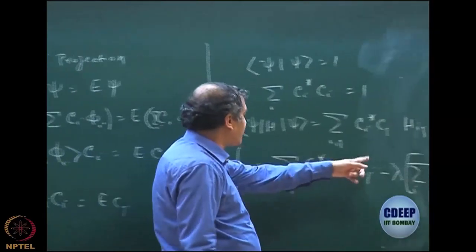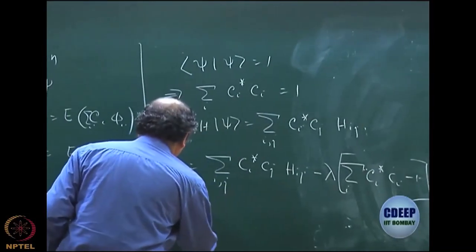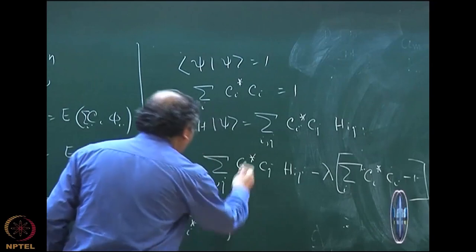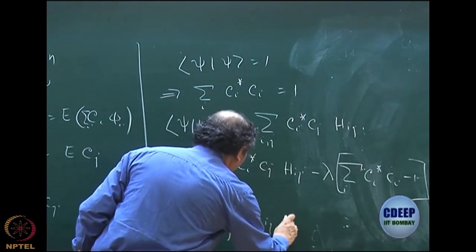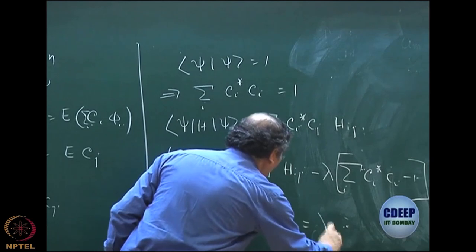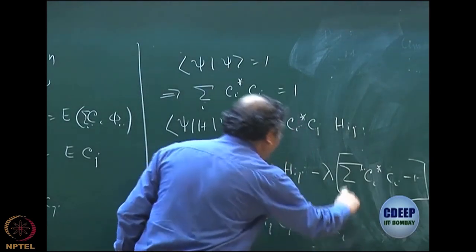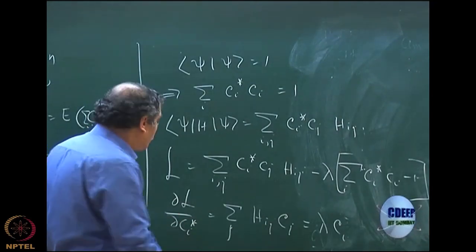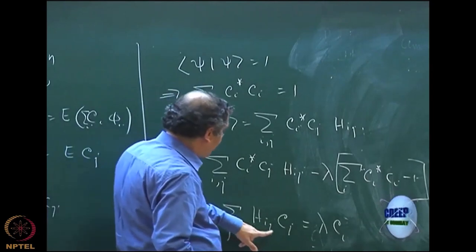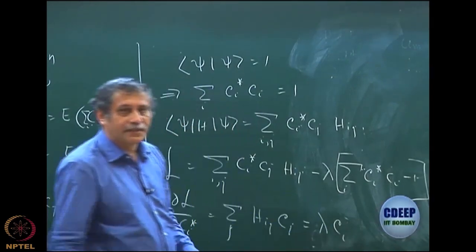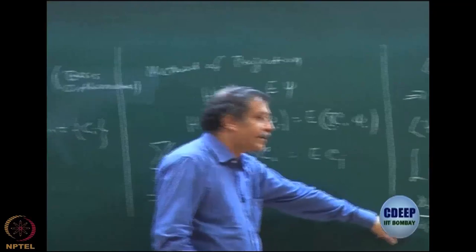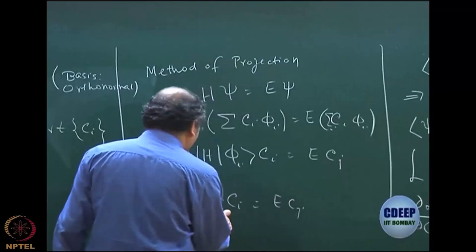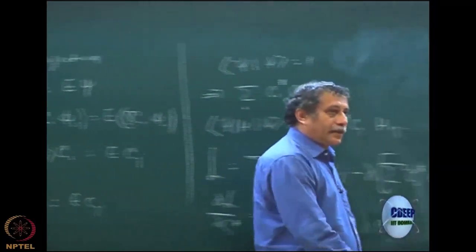Taking the derivative del L / del C_i star gives: sum over j H_ij C_j equal to lambda times C_i, so lambda becomes your energy E. You can rewrite with a specific index k: sum over j H_kj C_j equal to lambda C_k. This is the same eigenvalue equation. Note this is just i and j interchanged — otherwise it is the same equation. We had already done this.